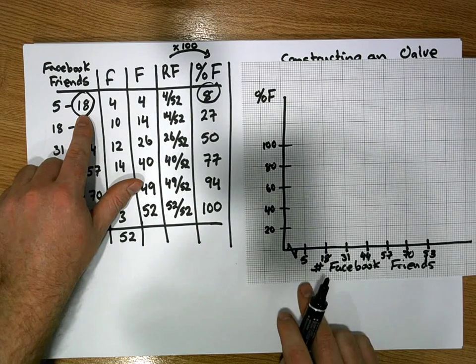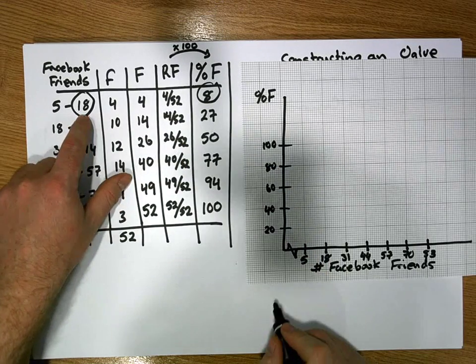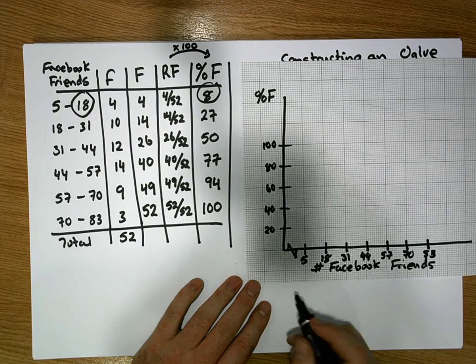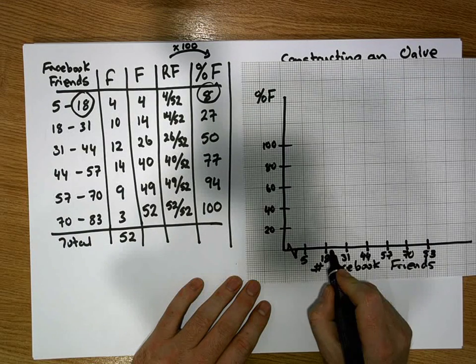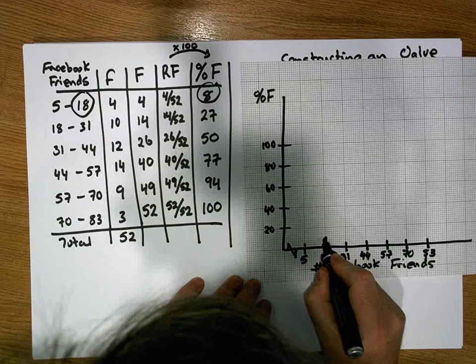So at 18 Facebook friends, we've observed 8% of the data set. Now I'm sure you can do this and be a lot more accurate than me. My pen's tip is pretty wide, but at 18, we should be going up to 8%, which is in around here. So what I'm going to do is put a little dot in there.